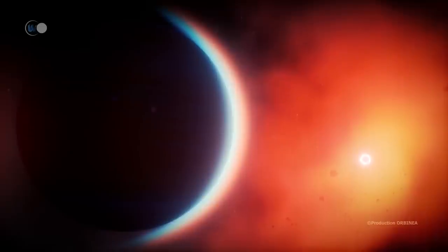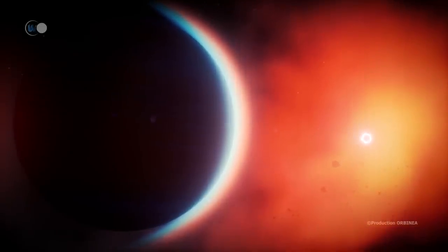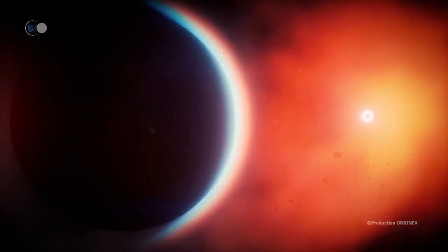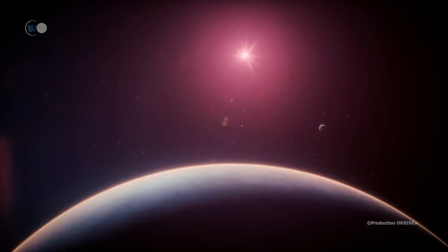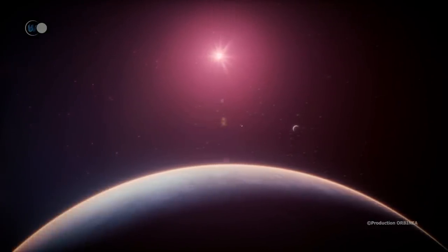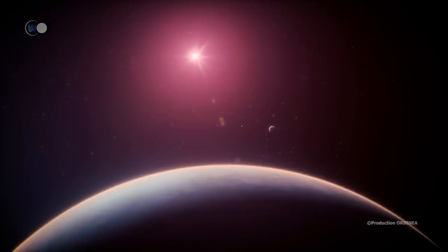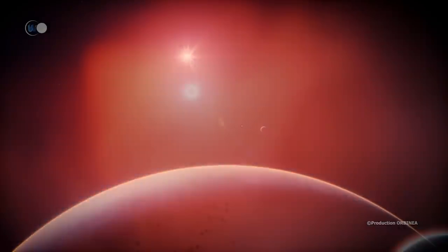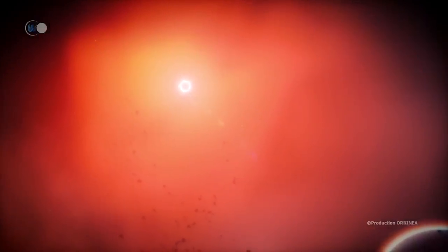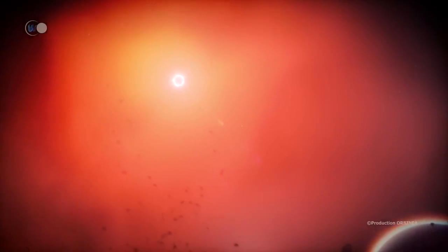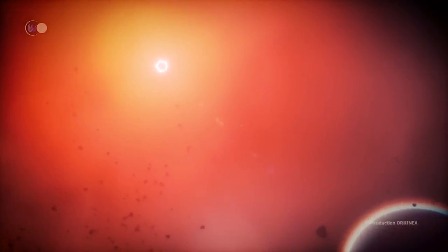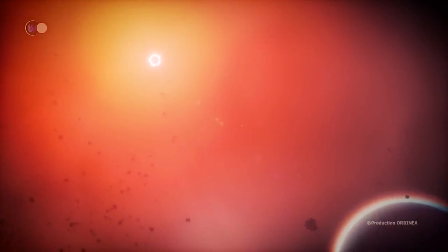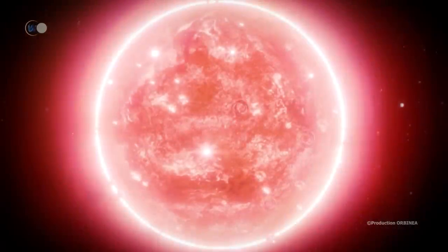Wolf 359 is one of the smallest stars known to date, its mass of 0.09 solar masses being at the lower limit. Indeed, a star whose mass is lower than 0.08 solar mass is not massive enough to ignite the hydrogen of its core. Wolf 359 is then at the limit to be considered also as a brown dwarf. Because of its small size, its radius being only 0.16 solar radius, it is entirely convective.